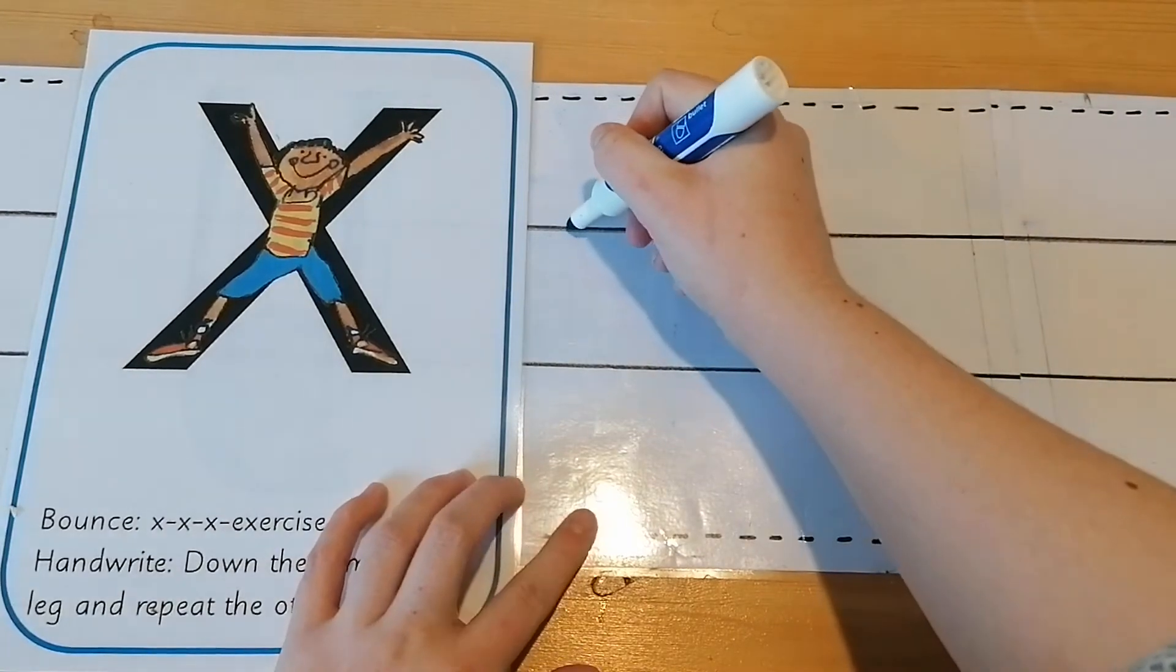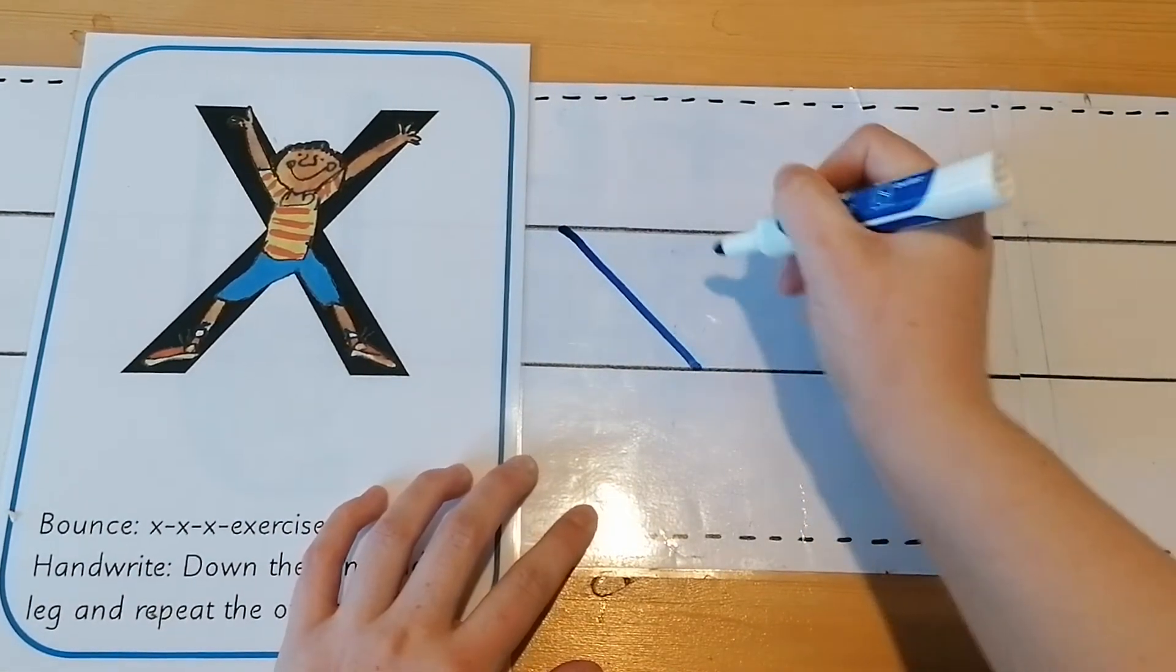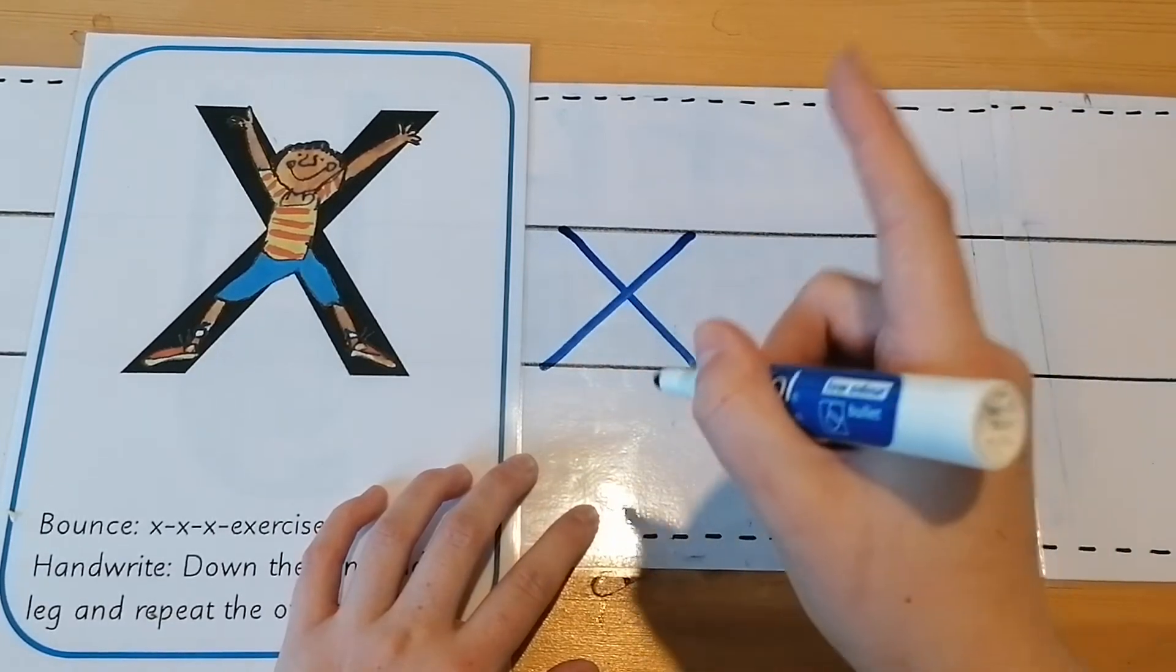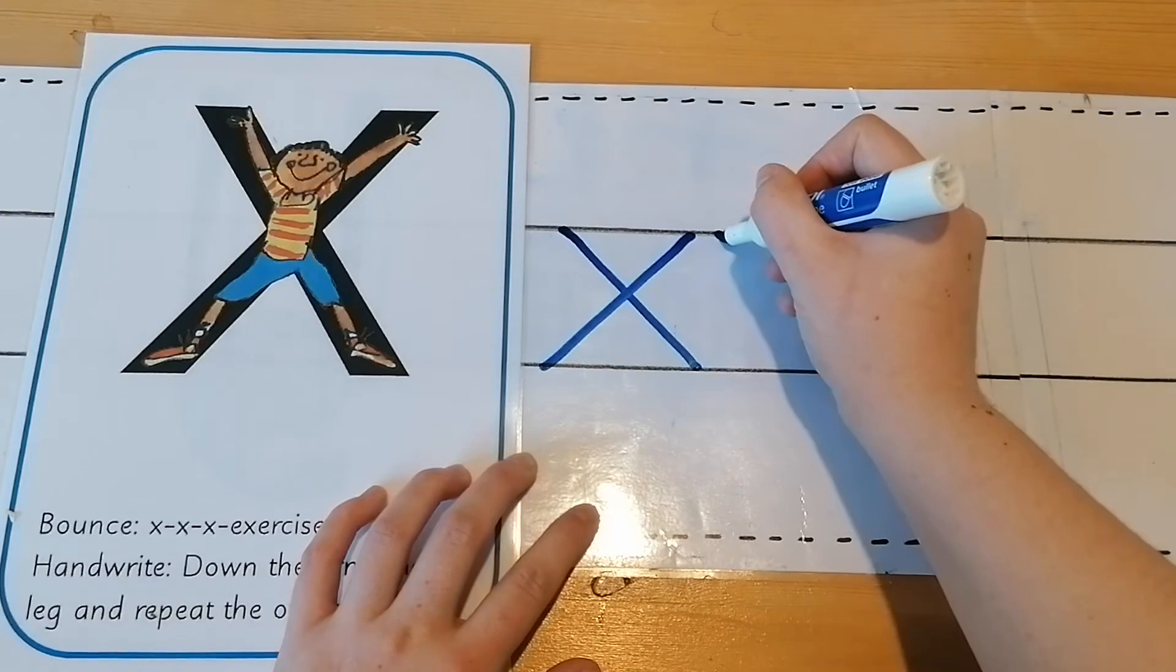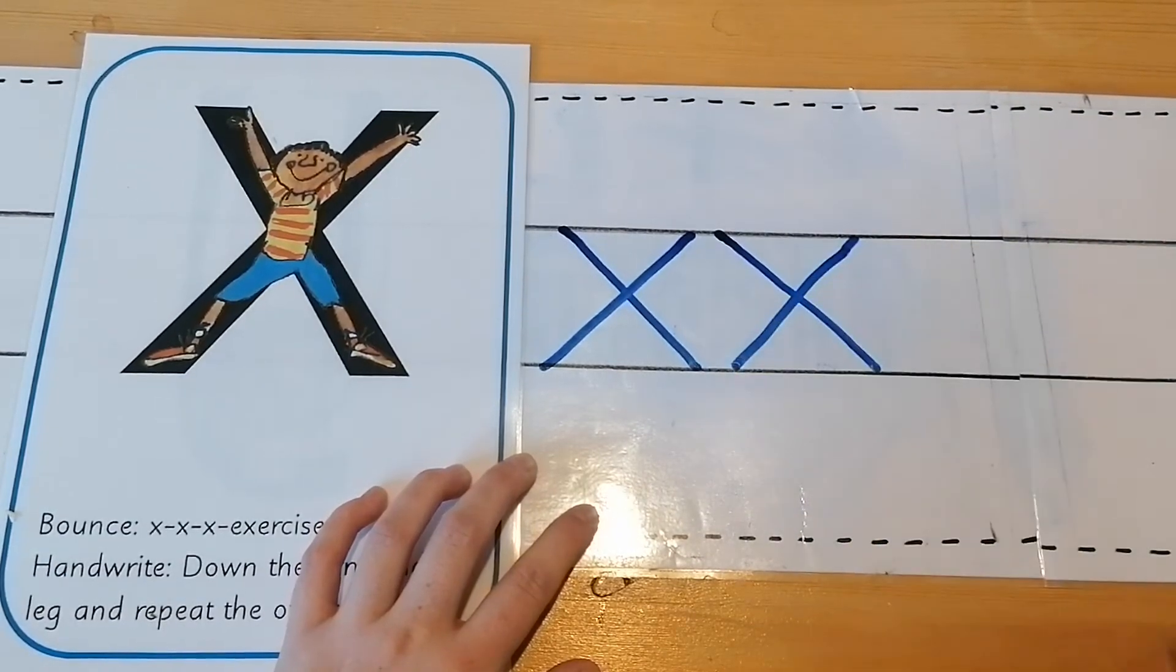We start at the top solid line, we go down the arm and leg a nice straight line and repeat the other side. Let's do it one more time. Down the arm and leg and repeat the other side.